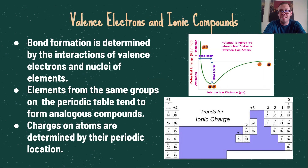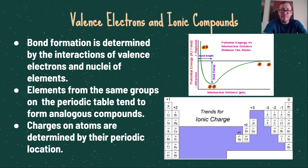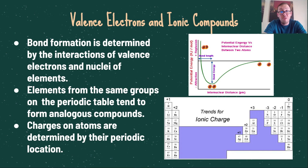Let's talk about valence electrons and ionic compounds. Bond formation is determined by the interaction of valence electrons and the nuclei of other elements. Elements from the same groups on the periodic table tend to form analogous compounds. For example, magnesium has a +2 charge, and oxygen has a −2 charge, so they bond in a 1-to-1 ratio to form MgO. Going down the −2 group, Mg and S would form MgS — the same 1-to-1 ratio concept.